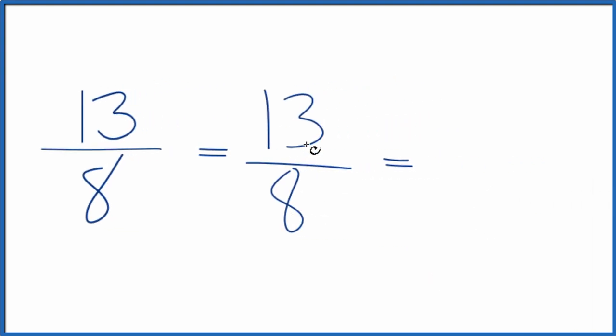So if we divide 8 into 13, that goes into 13 one time with 5 left over. And we just bring the denominator across. And 13 eighths, that improper fraction, that's equal to the mixed number 1 and 5 eighths.